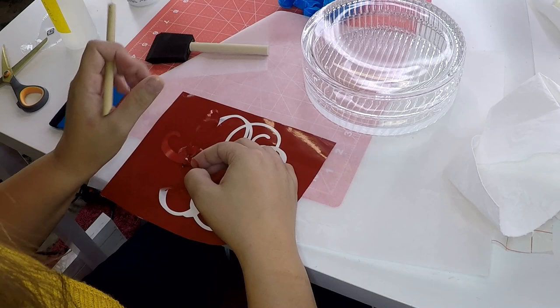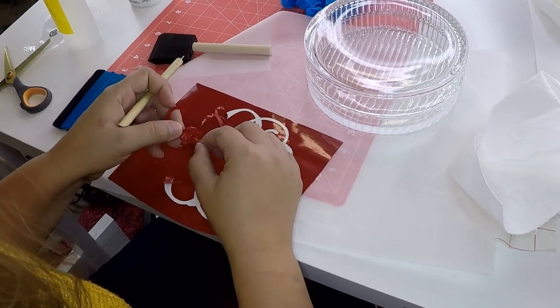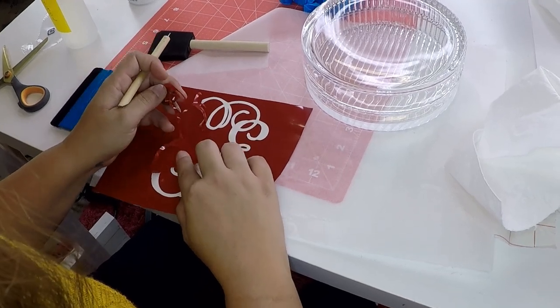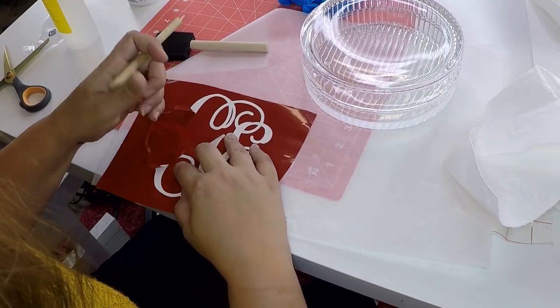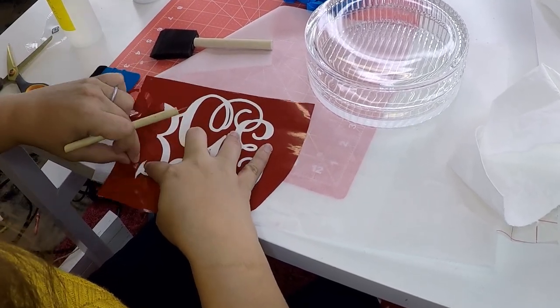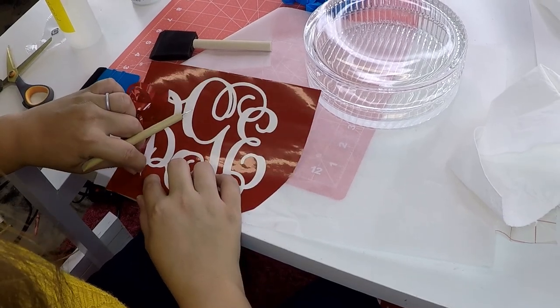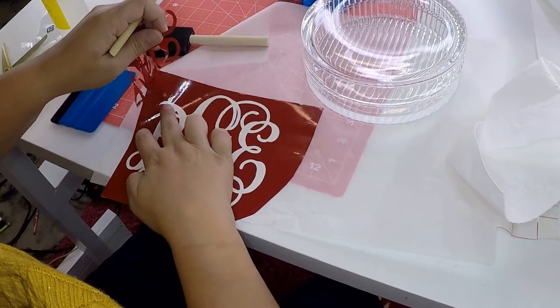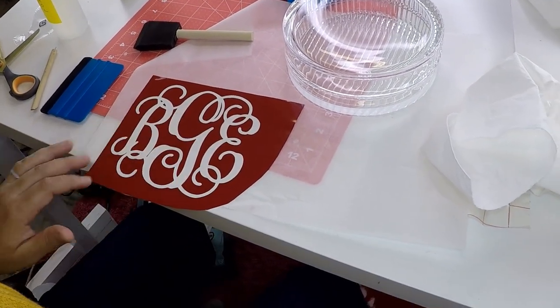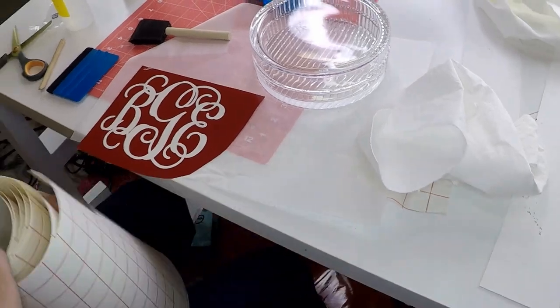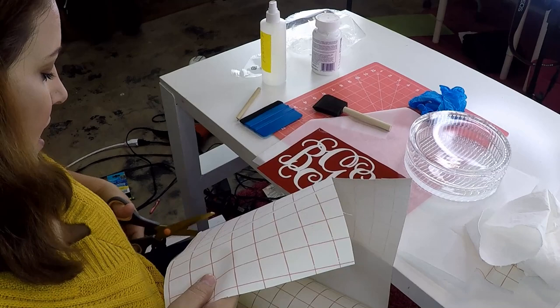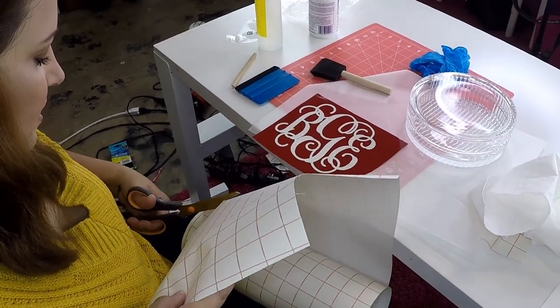We cut part of the monogram. So there you go. So as you can see we left the outer portion of the monogram. Now I'm just going to take and cut off some transfer tape and I made the monogram about six inches.